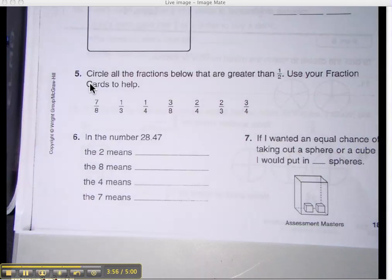Who wants to come up to do number five? Circle all the fractions below that are greater than a half. Go ahead and circle all of them. Go around that way. Go ahead and circle all the ones that are bigger than a half. Seven-eighths. I agree. Yes? Very good. Tasha's got it.